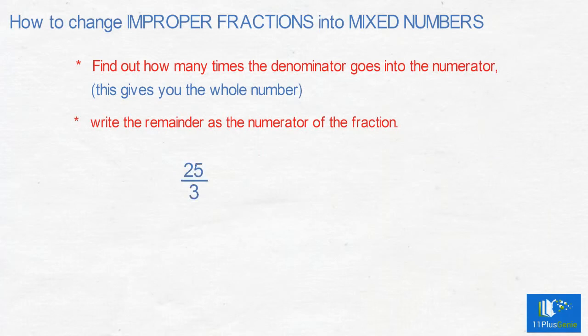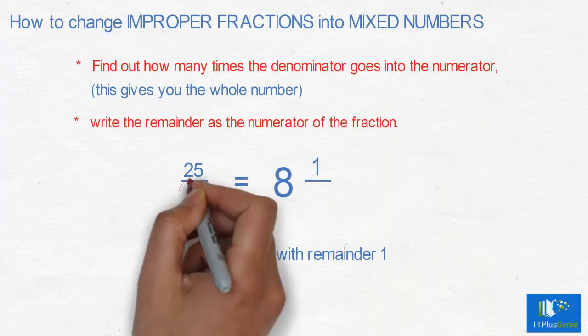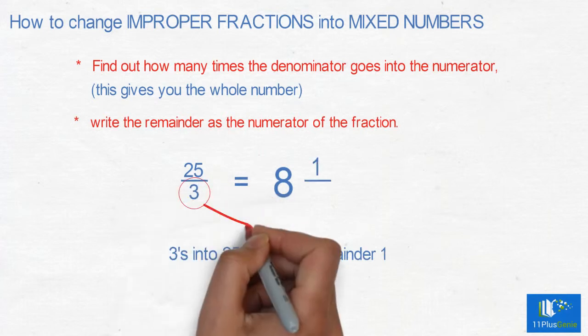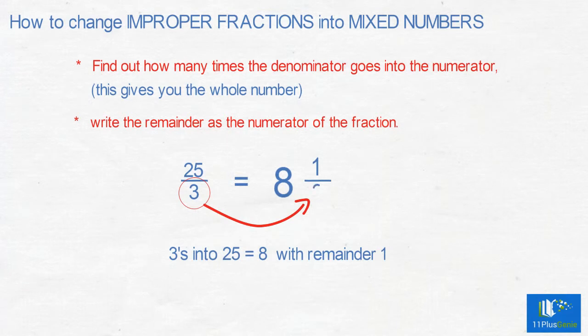25 over 3. How many 3's are in 25? It is 8 with a remainder of 1. The denominator of the improper fraction is the denominator of the fraction. So 25/3 equals 8 and 1/3.